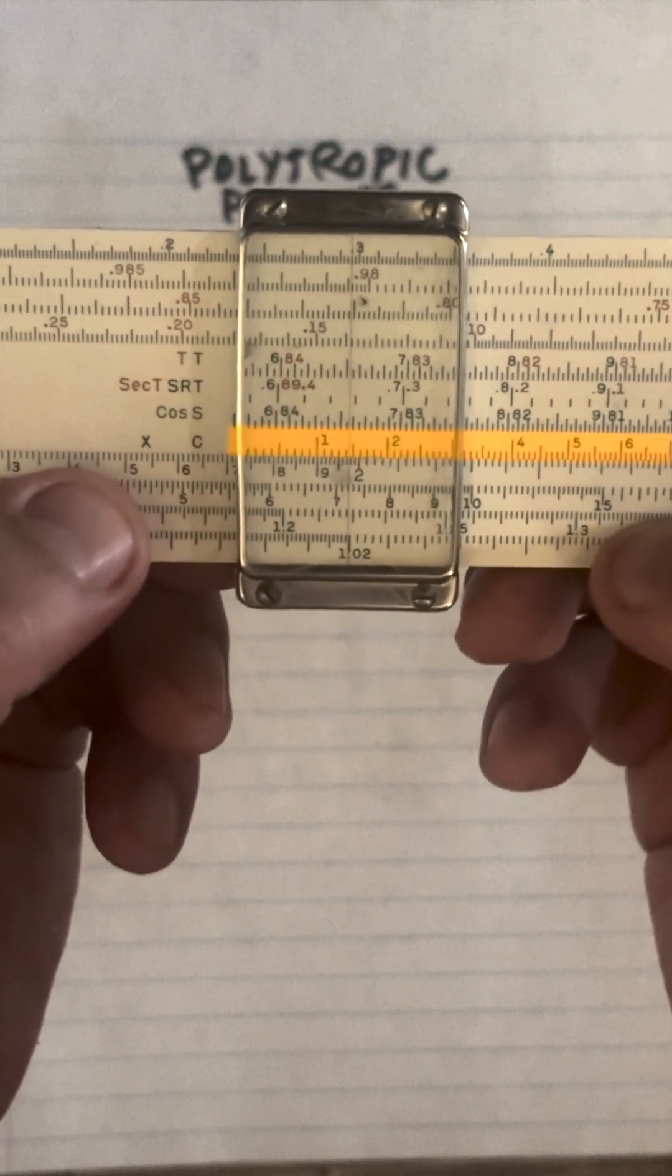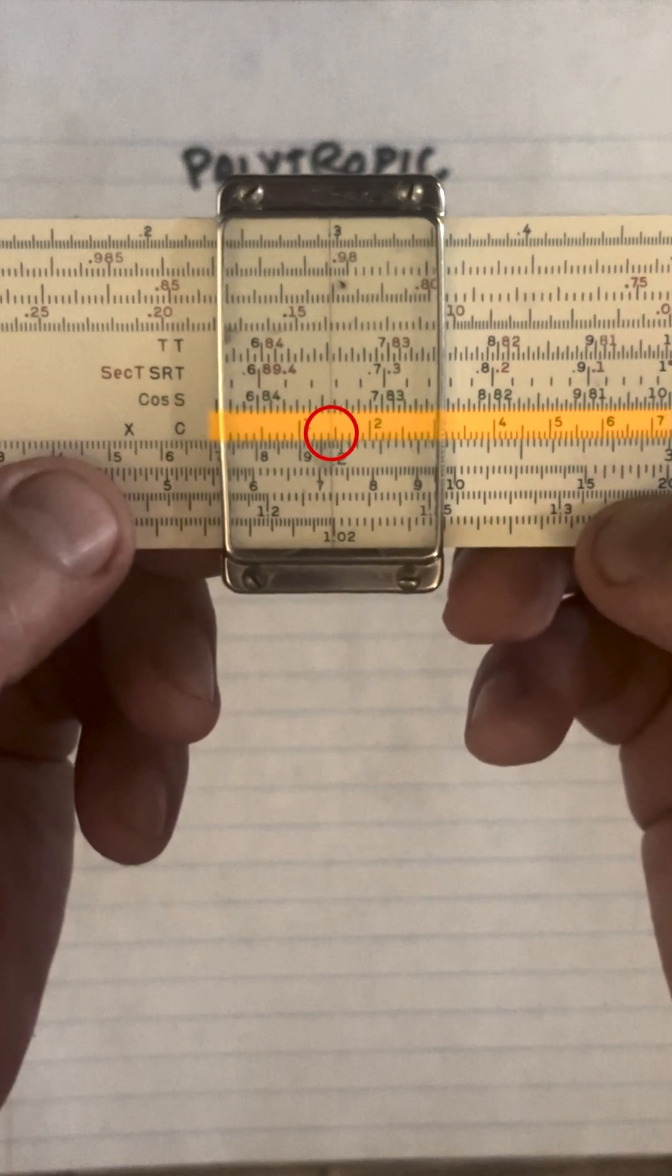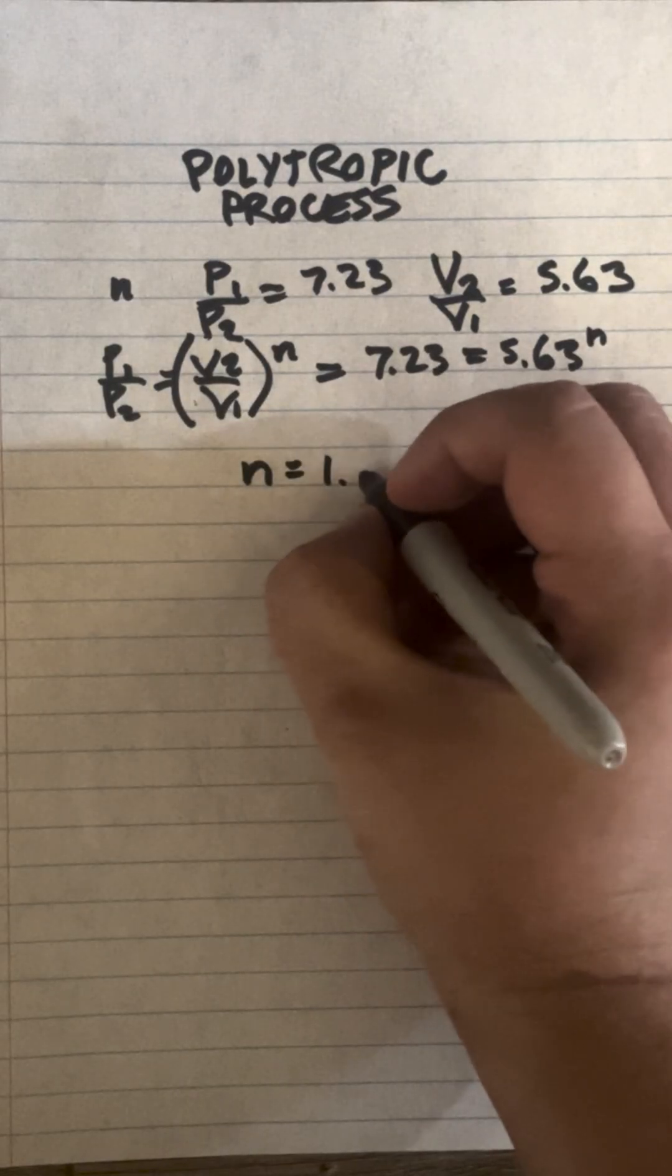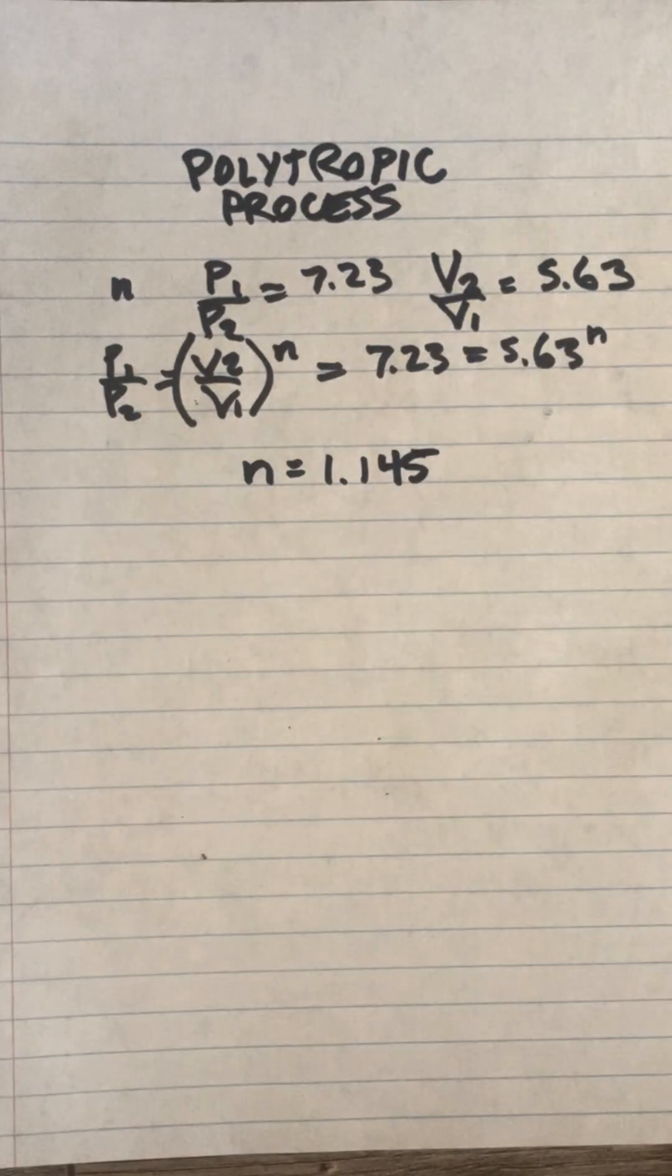And if I look up on C, I'm going to be at 1.145. So we've solved for n. n is 1.145, and that's our answer.